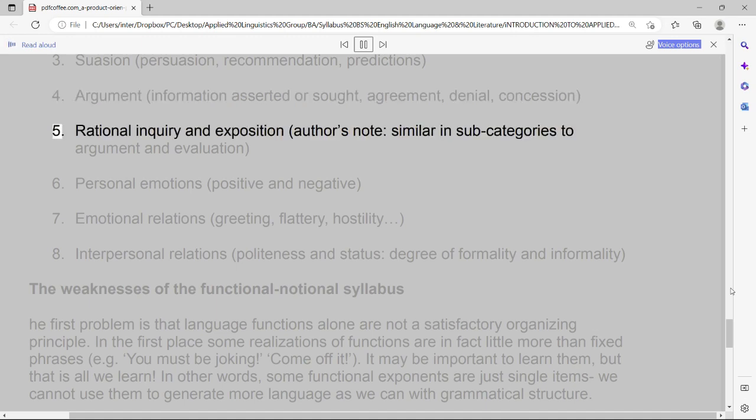5. Rational inquiry and exposition, authors note, similar in subcategories to argument and evaluation.